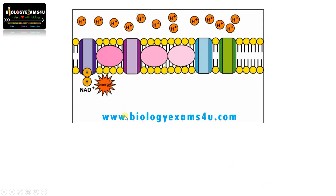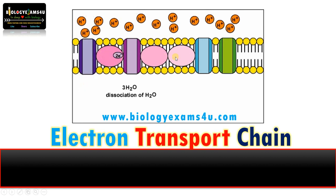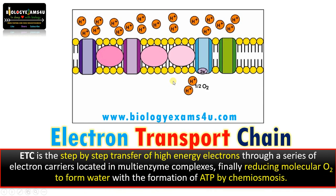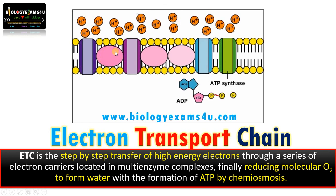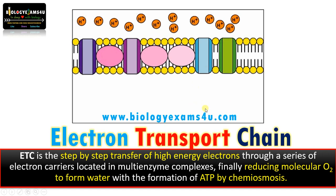Let's take the term electron transport chain. There is a transport of electrons — NADH donates electrons and they are transported to different carriers located on the inner mitochondrial membrane. That is why it is called the electron transport chain. We can define it as a step-by-step transfer of high energy electrons through a series of electron carriers located in multi-enzyme complexes, finally reducing molecular oxygen to form water, with the formation of ATP by chemiosmosis.